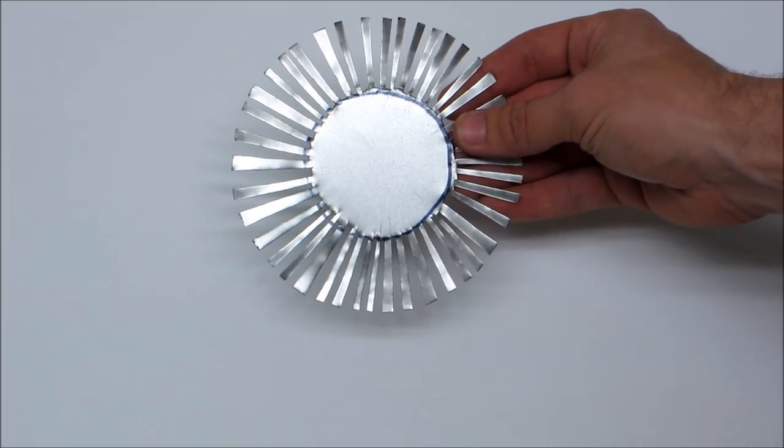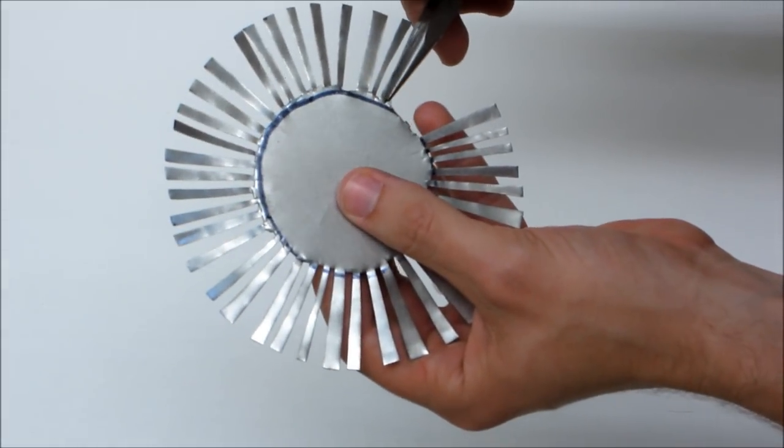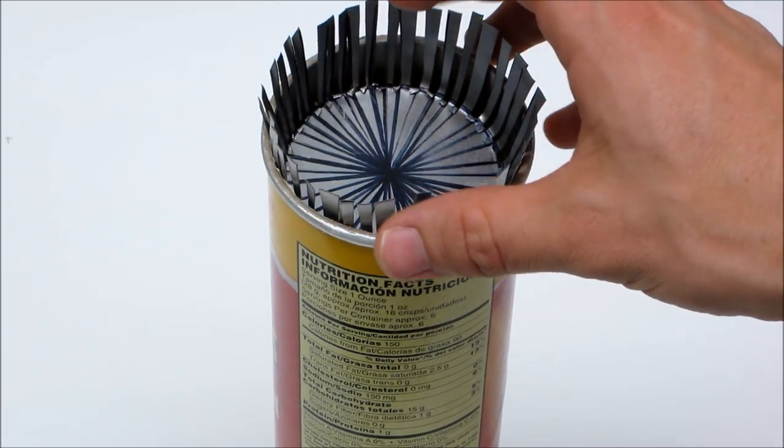Next, cut slots in the outer portion of the plate. Using the needle nose pliers, bend the metal strips down to a little bit less than 90 degrees. They should be flared out to be a little bit wider than the can.